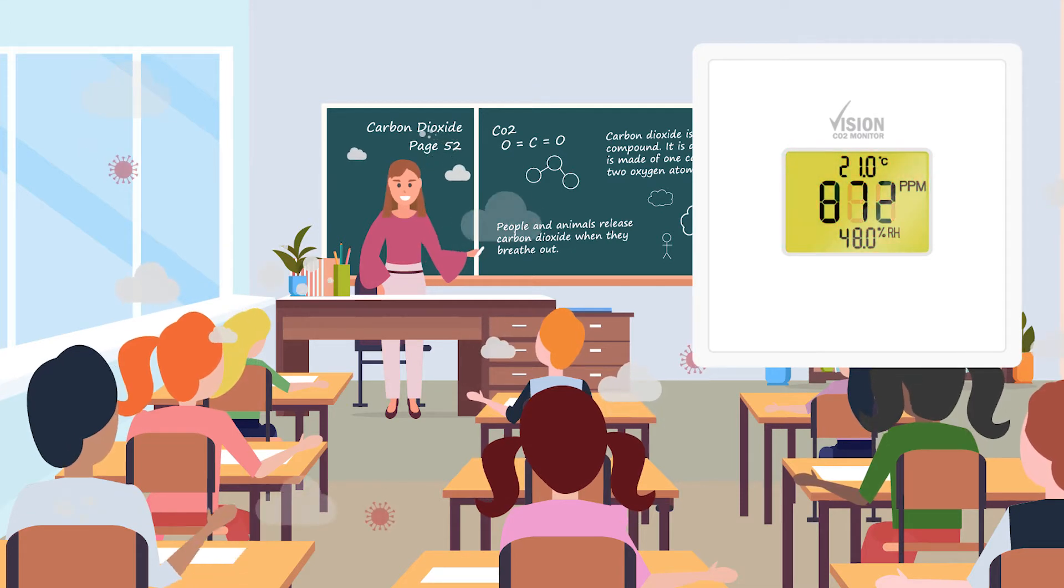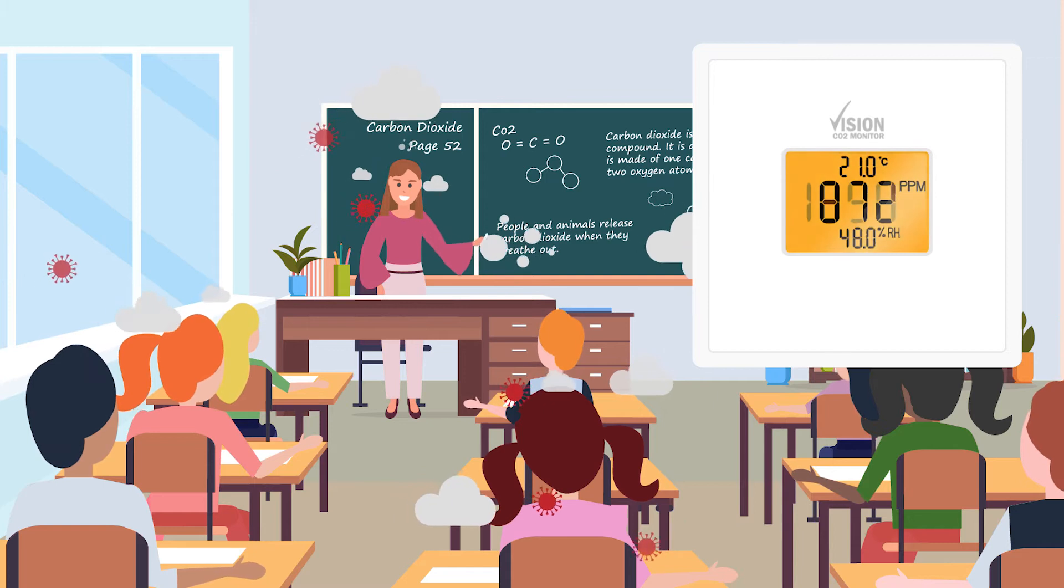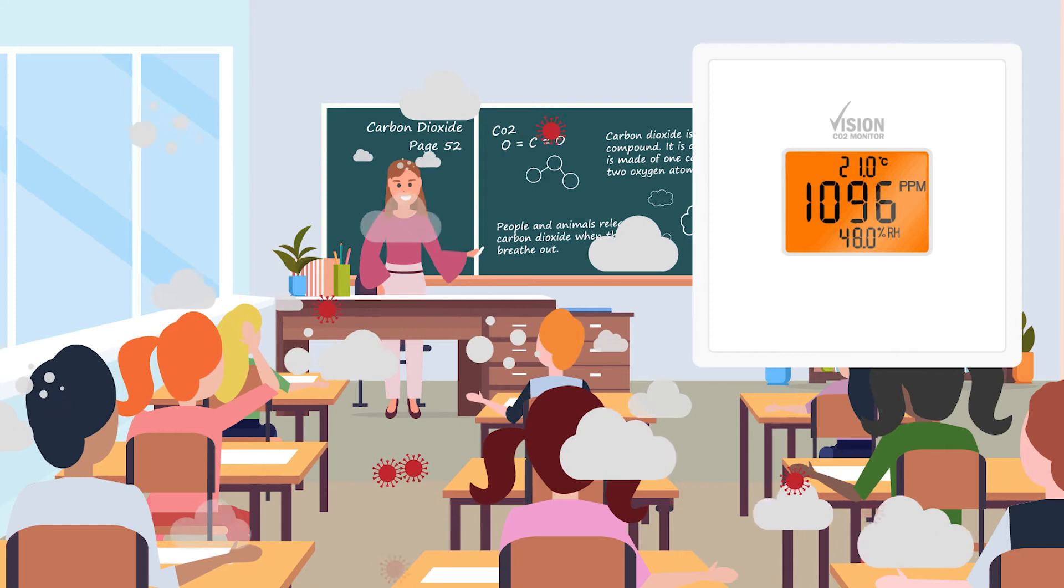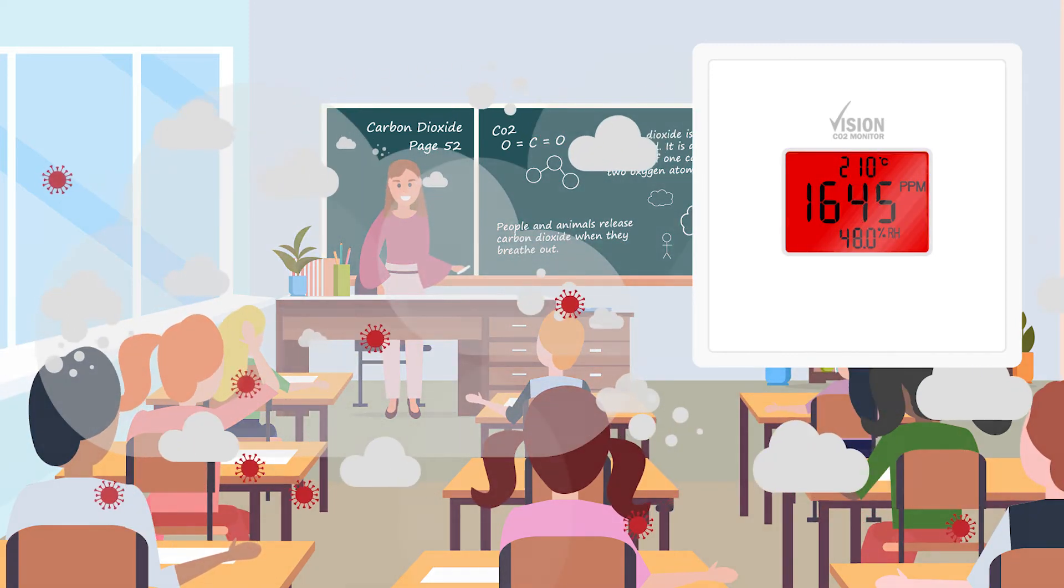Heavily occupied spaces such as classrooms pose a greater risk due to the occupancy density. If someone in the room is carrying a virus, poor ventilation can significantly increase the risk of airborne transmission due to the number of virus particles that are in the air.